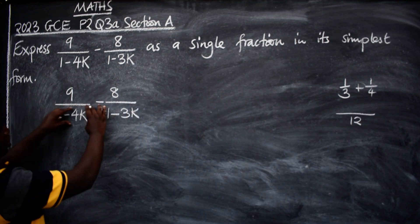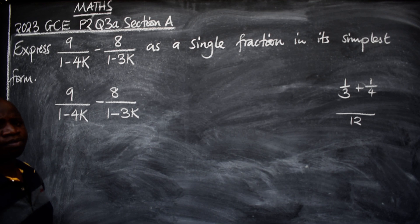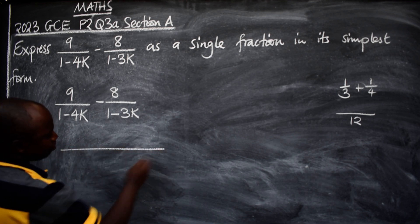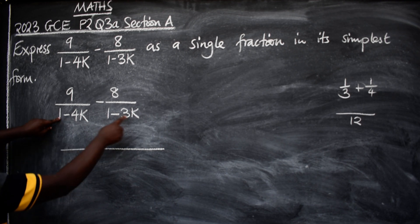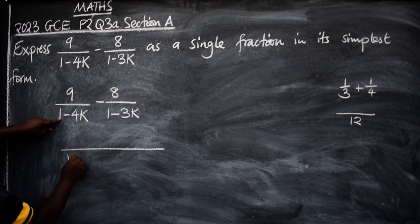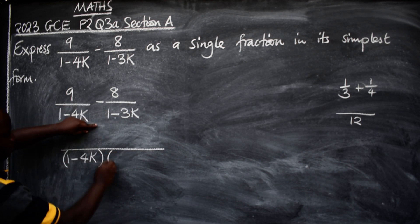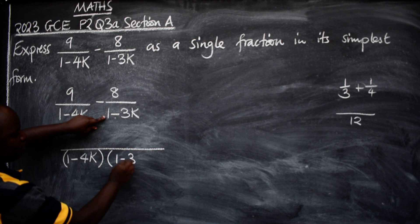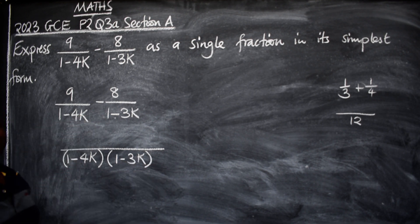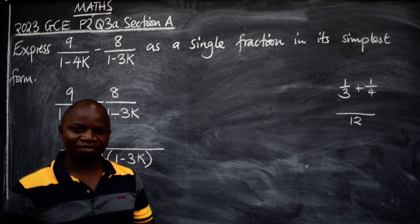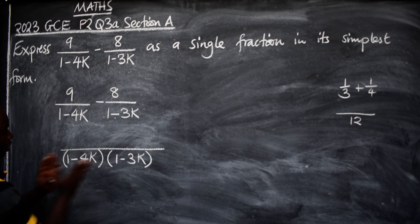Now we have these expressions here as denominators. What do you do? We just write this, then you get the denominators: 1 minus 4k, put it in brackets, another one without the symbol, 1 minus 3k. This is your denominator or your common factor.